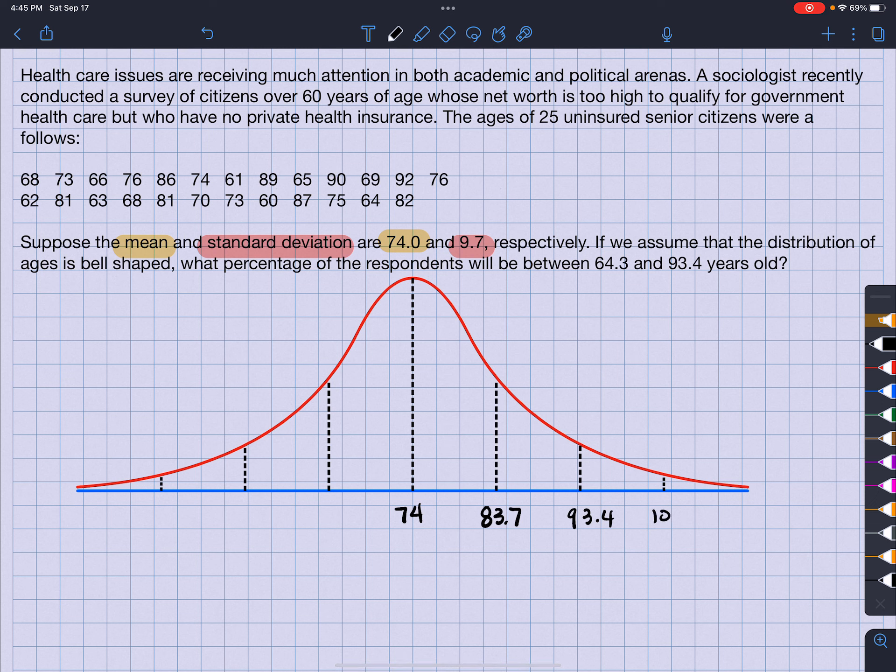Then I'll take 74 and subtract 9.7 to get 64.3, subtract another 9.7 to get 54.6, and subtract another 9.7 to get 44.9.